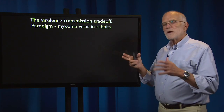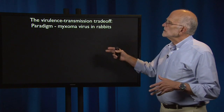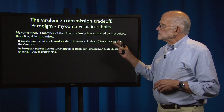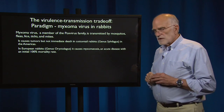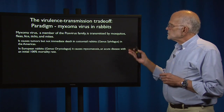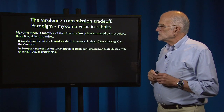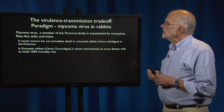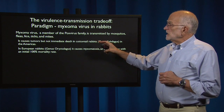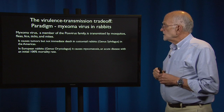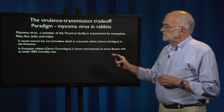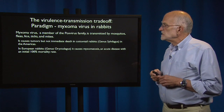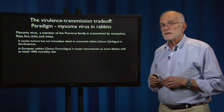The example that brought that idea to the forefront is myxomavirus in rabbits. The myxomavirus is a member of the poxvirus family. It's transmitted by mosquitoes, fleas, ticks, lice, and mites — so it's an arbovirus. It causes tumors but not immediate death in cottontail rabbits in the Americas, but in European rabbits (the genus Oryctolagus), it causes myxomatosis, which is an acute disease that initially has a 100% mortality rate.